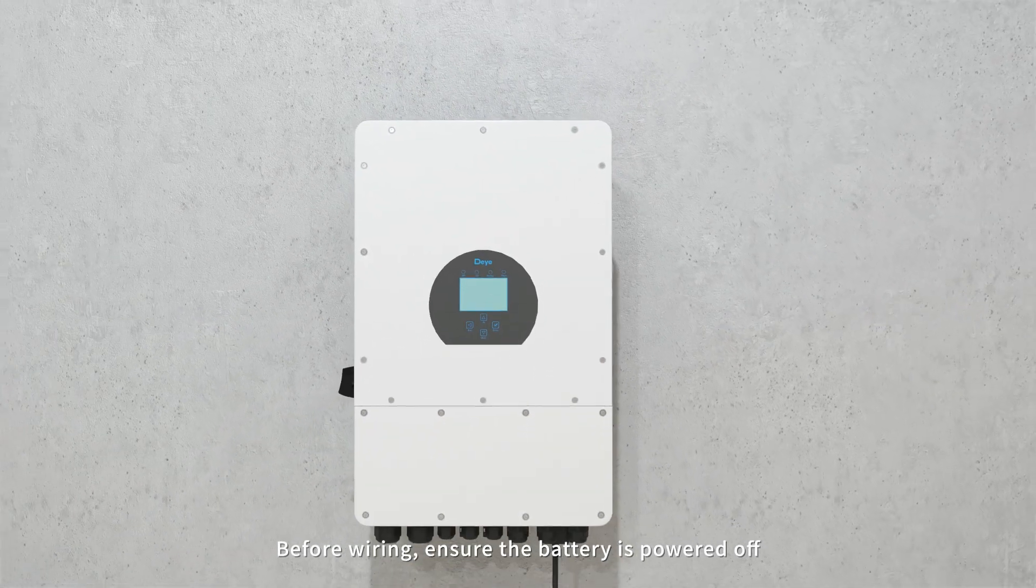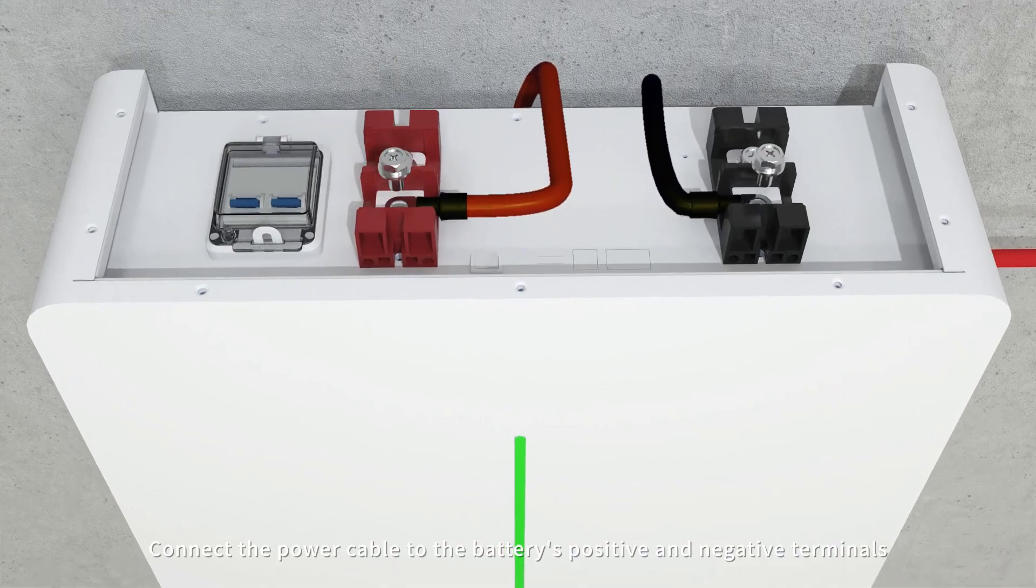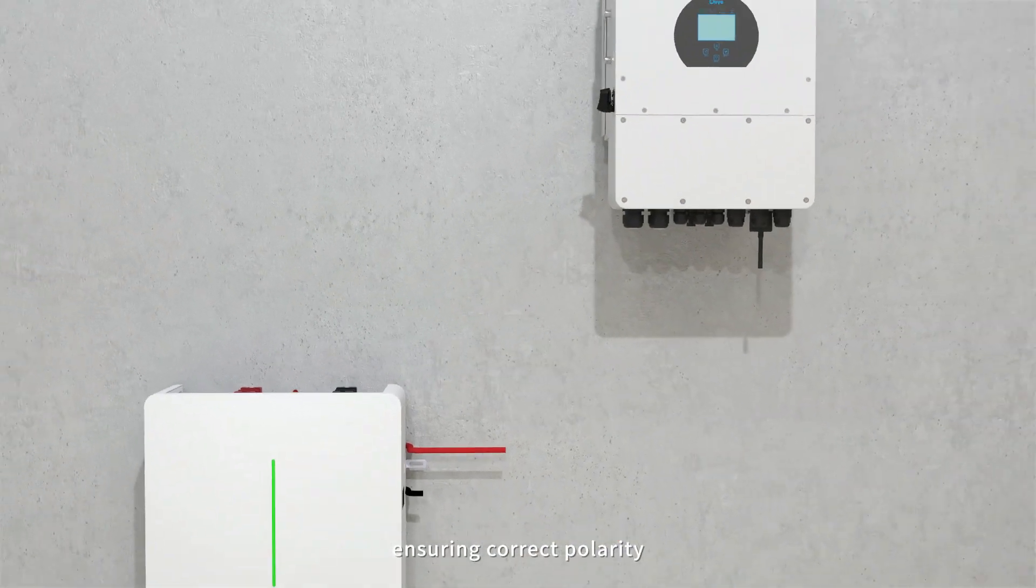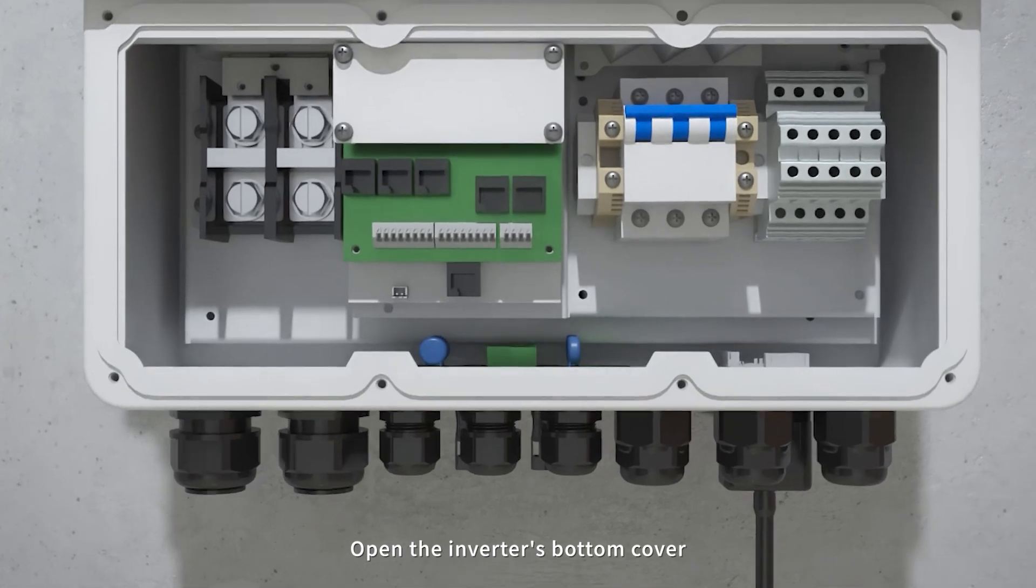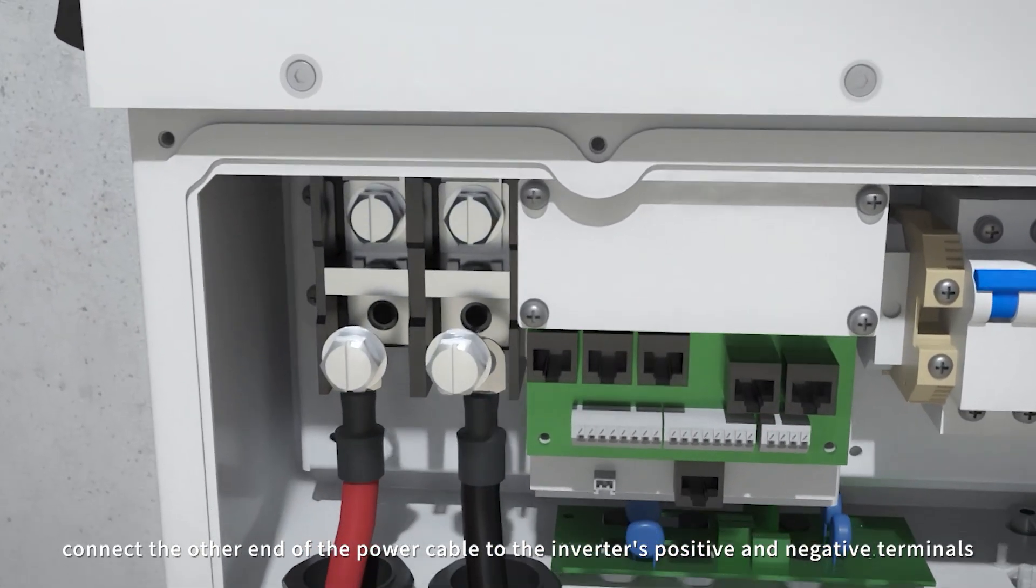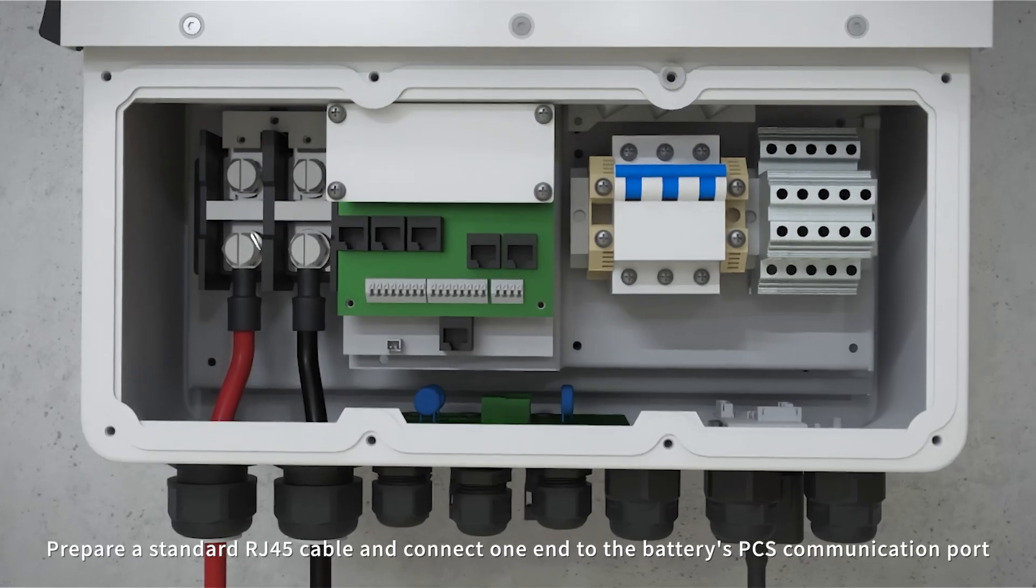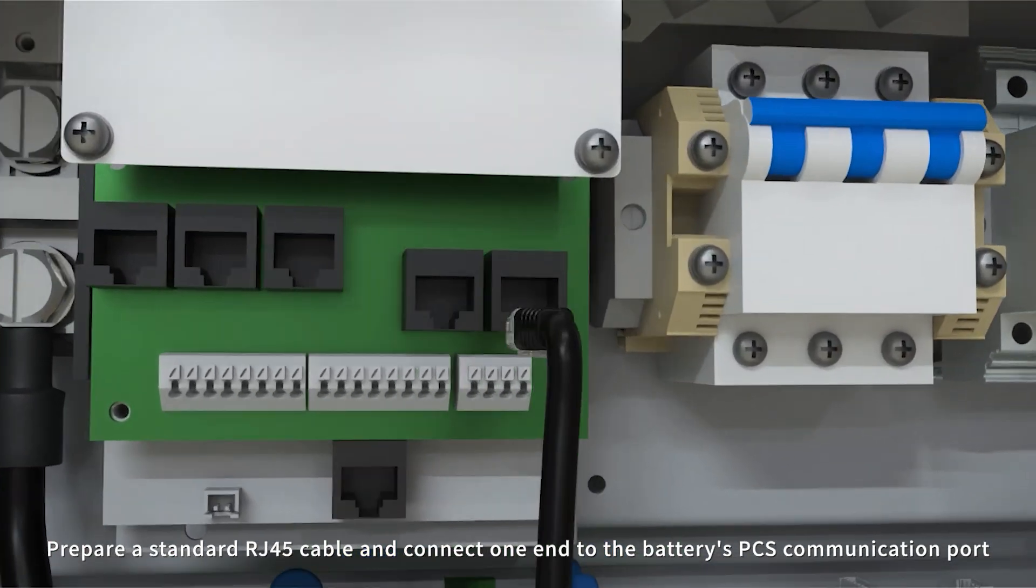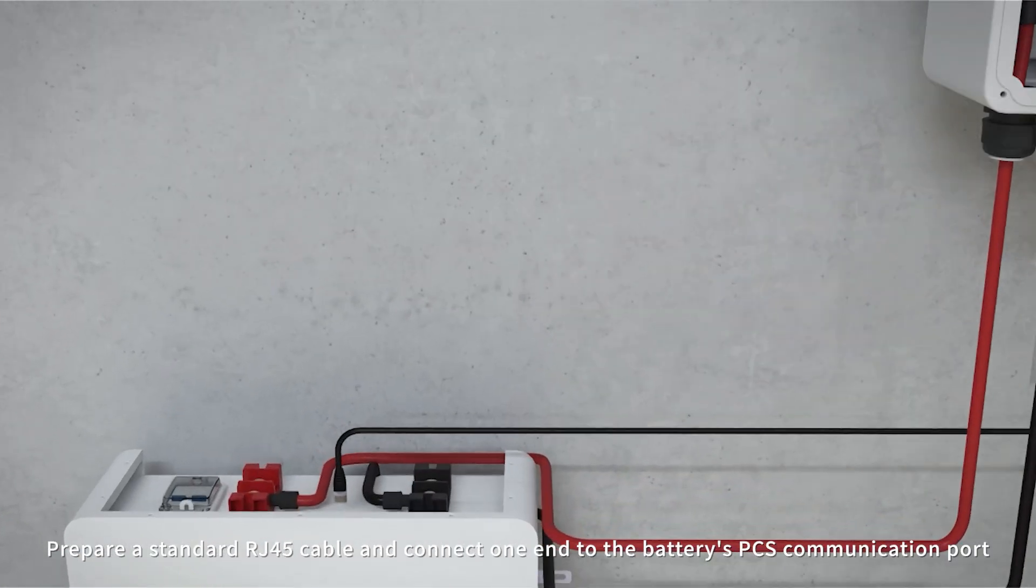Battery and inverter connection: Before wiring, ensure the battery is powered off. Connect the power cable to the battery's positive and negative terminals, ensuring correct polarity. Open the inverter bottom cover. Connect the other end of the power cable to the inverter's positive and negative terminals and ensure correct polarity. Prepare a standard RJ-45 cable and connect one end to the battery's PCS communication port.